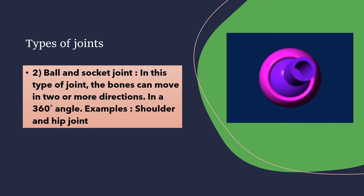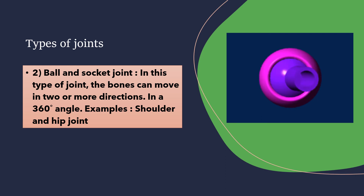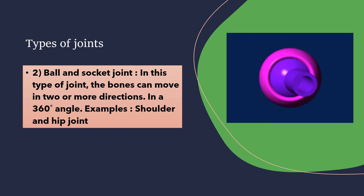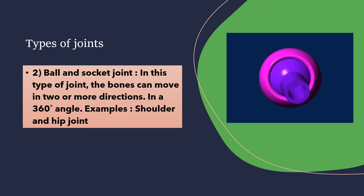The second type is the ball and socket joint. In this type of joint, the bone can move in two or more directions — in a 360-degree angle. Examples include the shoulder and hip joint, where full circular movement is possible.